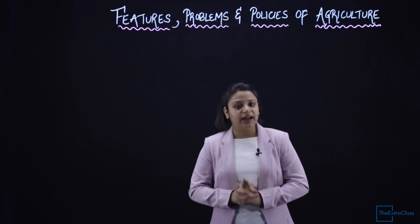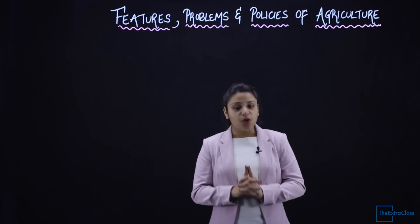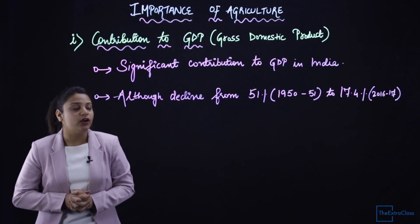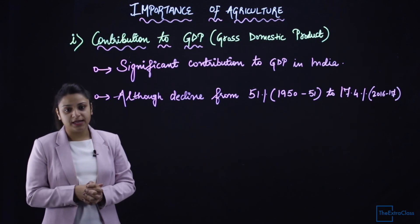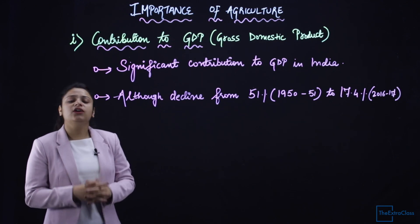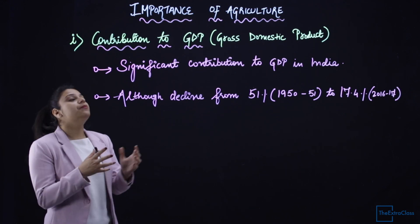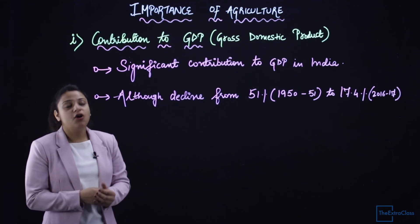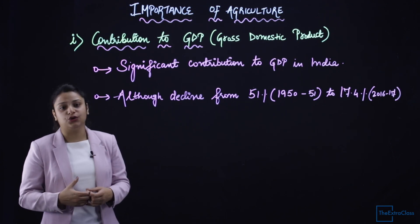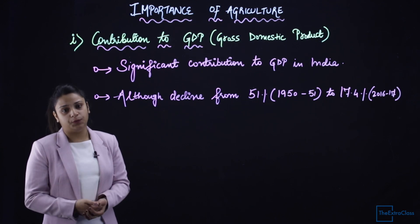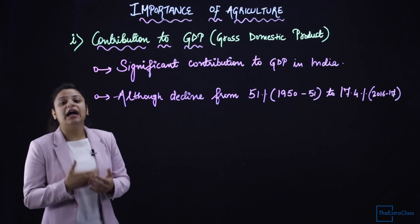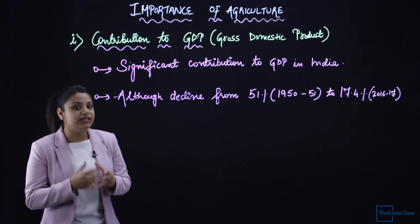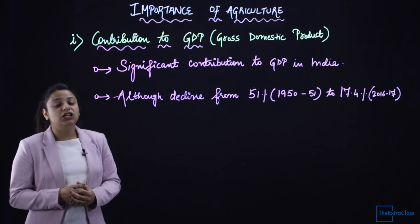First, we will understand why the agricultural sector is so important — not only in India's economy, but in any country's economy. The agriculture sector is the base of the further tertiary and secondary sectors. Whatever we consume is cultivated, which is why the agricultural sector is a base. Without that base, the industrial sector will not flourish.